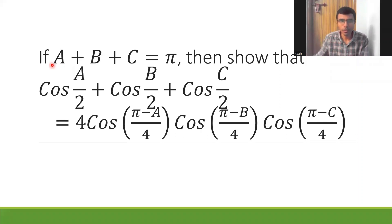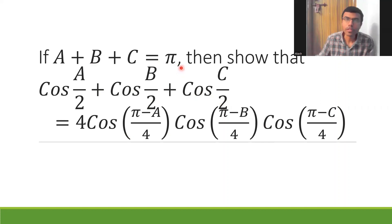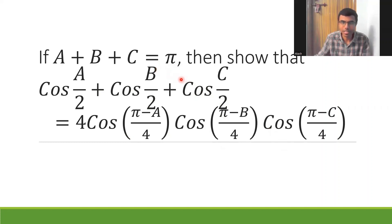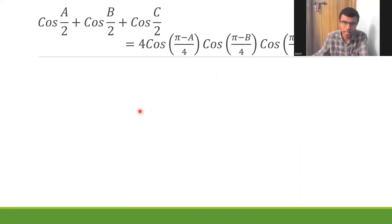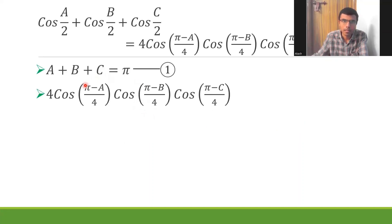Hello learners, now let us see how to show that cos(A/2) + cos(B/2) + cos(C/2) is equal to the product on the RHS, given that A + B + C = π. For this, I'm going to start with my RHS, because coming from the LHS is a bit difficult. When questions involve terms like π minus A, π minus B, it's better to start from the RHS.